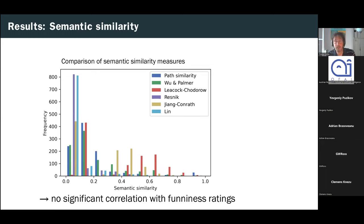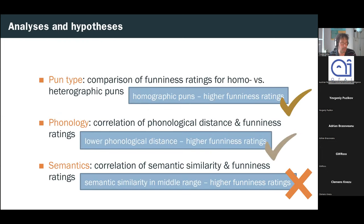And finally, semantic similarity. So this frequency plot is similar to the one that we saw for phonetic similarity, except that it's for semantic similarity. And we can see that there's a bit more variation across the different semantic similarity measures. But generally, most puns tend to have high semantic distance from the targets. Beyond this rather unsurprising result, we actually weren't able to come to any conclusions. In particular, we did not observe any significant correlation between semantic distance and the funniness of a GPPL. So unfortunately, our third hypothesis that a semantic similarity in the middle range would result in higher funniness ratings remains unproved.